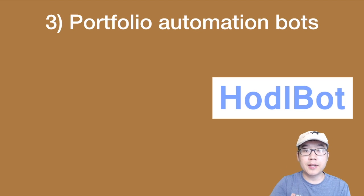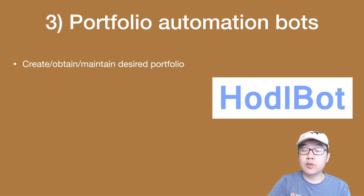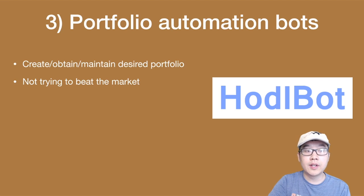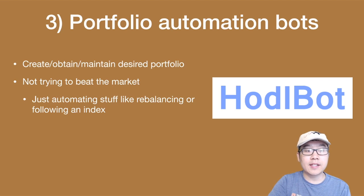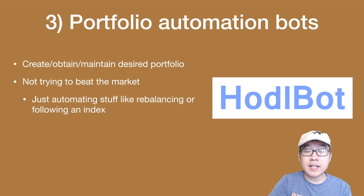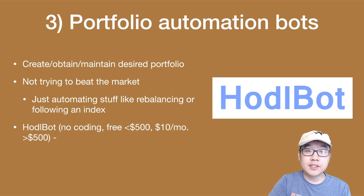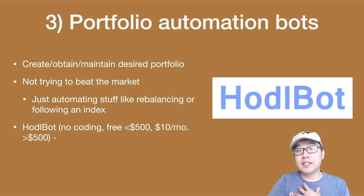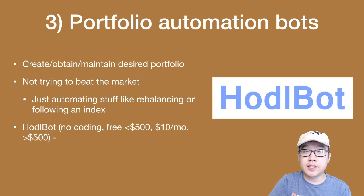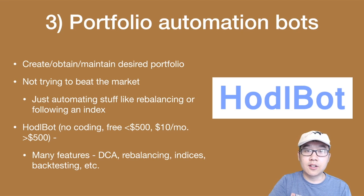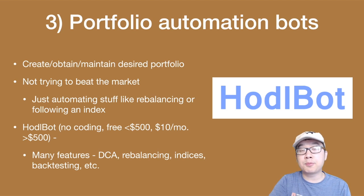Number three is portfolio automation bots, like HODLBOT. With these you can create, obtain, and maintain your desired portfolio. They're not really trying to beat the market — they're just trying to automate things like rebalancing or following a certain index that would take a lot of time to do manually every month. For HODLBOT specifically, I have used it and am currently using it. No coding required, free for under $500, and only $10 a month if you have over $500 in your Binance account. Features include dollar cost averaging, rebalancing, indices, and backtesting. I've been using it for rebalancing into top coins during this bear market.